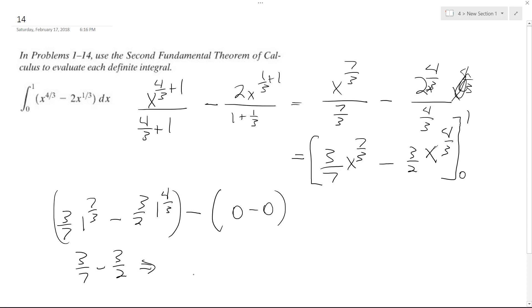which is going to be equal to, 14 is the common denominator. So six over 14 minus seven, 20, 21 over 14. So ultimately, we end up negative 15 over 14.